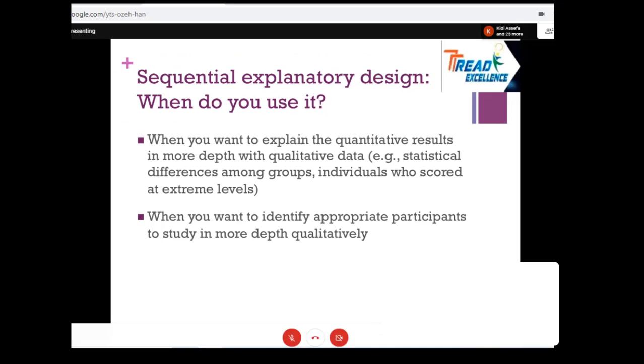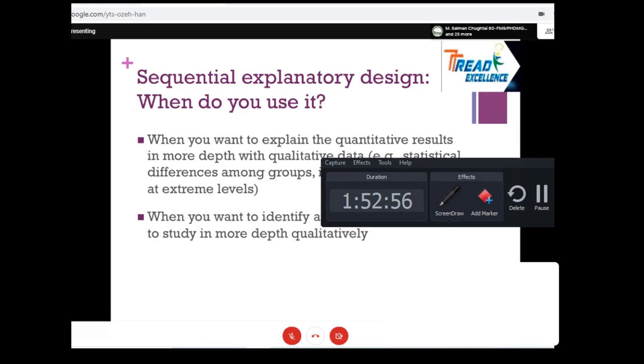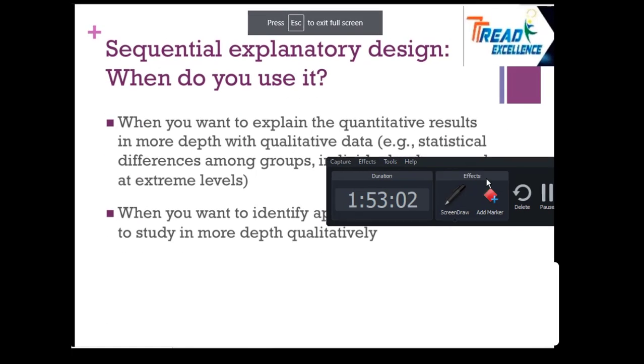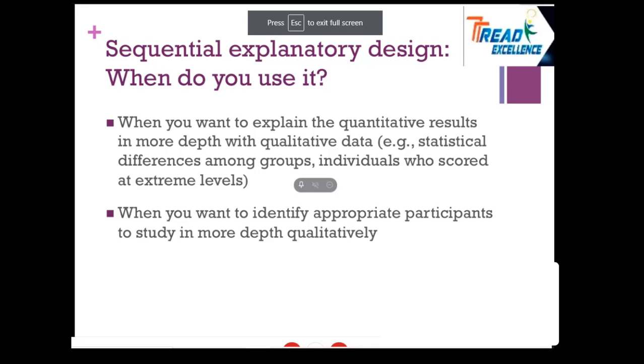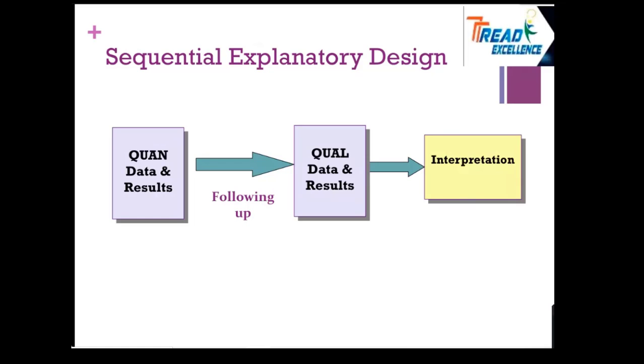So the purpose can be different, and whatever the purpose is, that actually fixes the predetermined criteria of selection for your participants of the qualitative phase when we are specifically talking about sequential explanatory design. It is following up quantitative data and results, then qualitative data and results, and then the point of interface is the interpretation of those results.